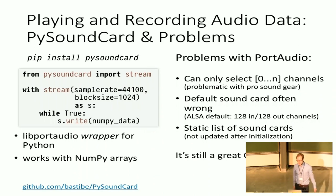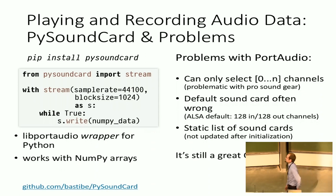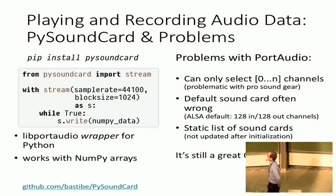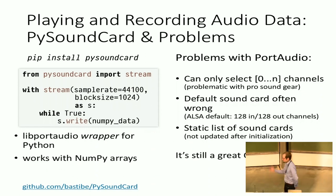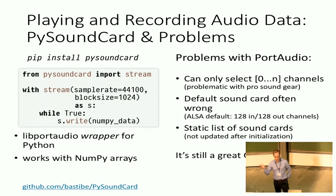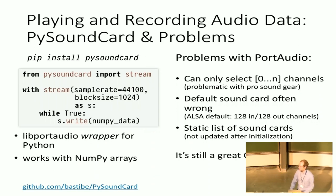So if I want channels seven and eight for my guitar preamp, I'll have to read the whole first eight channels — zero to eight — which is performance critical, so you don't want that. Also, PortAudio sometimes gets the default sound card wrong, which means you start to play something and don't hear anything. This is particularly bad on Linux because it uses ALSA, and the default ALSA audio device is often the system mixer, which has 128 channels.